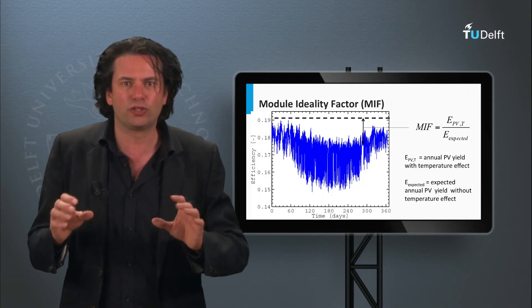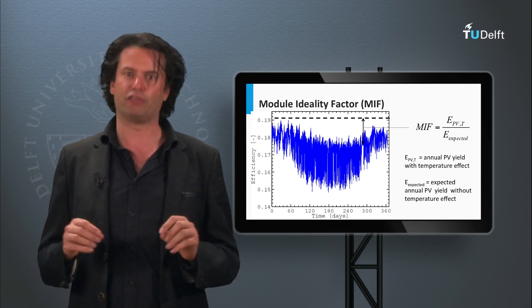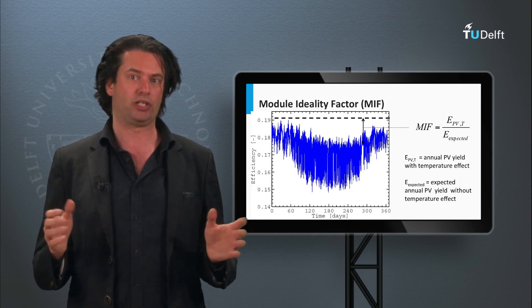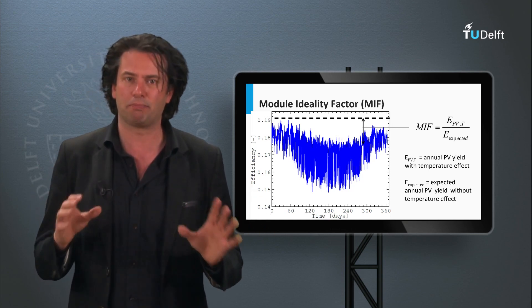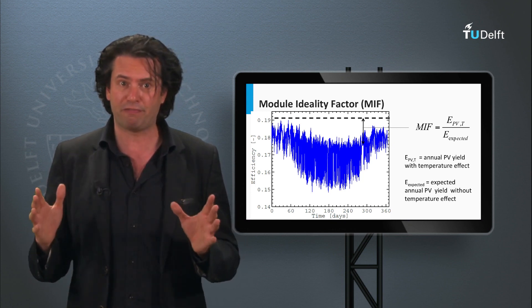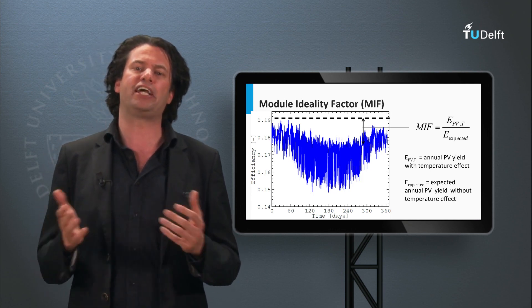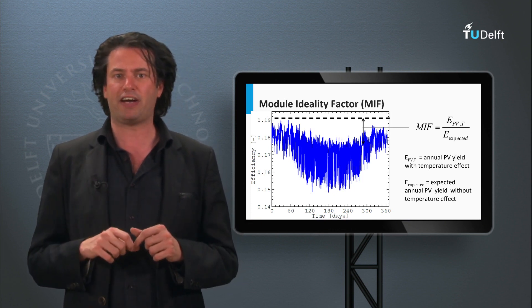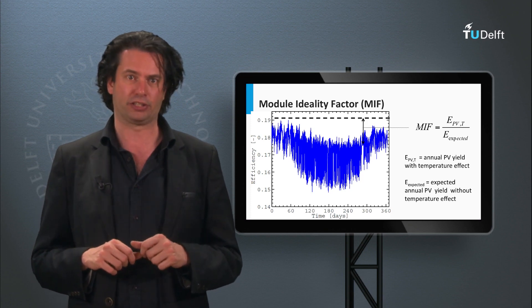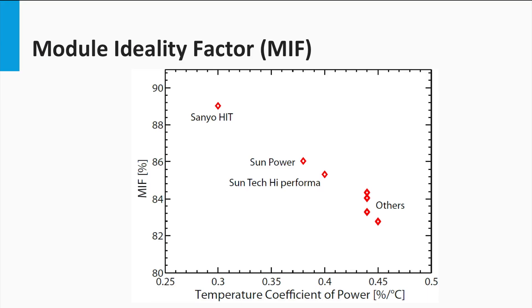Now, the extent to which the temperature impacts the module output is a function of the PV technology and the manufacturing process, which collectively decides the temperature coefficients of the PV module. The temperature effect is also a function of the ambient conditions. For the same technology there could be a deviation in the temperature coefficients due to the manufacturing processes and other design modifications. The following graph shows the spread of a few of the common silicon based modules based on their module ideality factors and the temperature coefficient. These numbers have been calculated after modeling the temperature effects of these PV modules for the ambient conditions in the Netherlands in the year 2012.